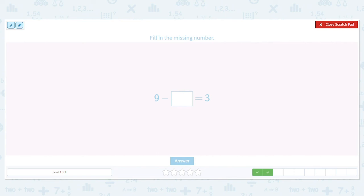But I can still subtract. When I'm missing this middle number, I can take this and subtract my answer from it. So 9 minus 3 equals what? 6. So 9 minus 6 equals 3.